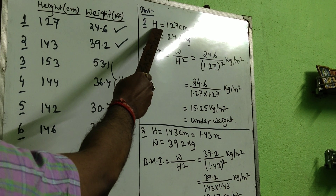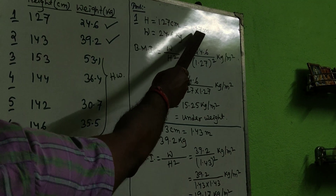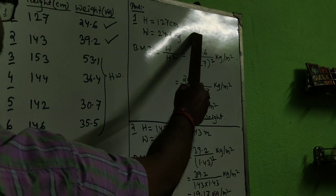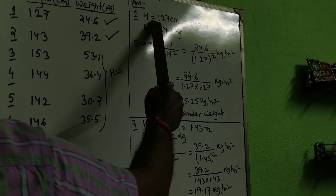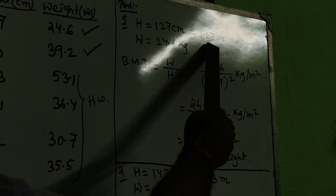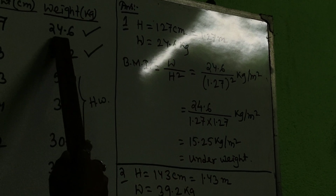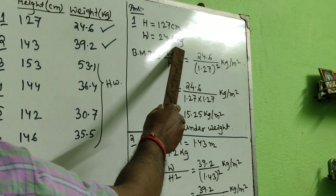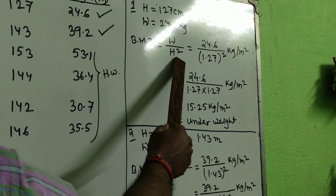For the first example: height is 127 centimeters. First, convert centimeters to meters by dividing by 100, giving 1.27 meters. The weight is already given as 24.6 kg. The BMI formula is weight divided by height squared — meaning you write the height value two times as a product to get the square.